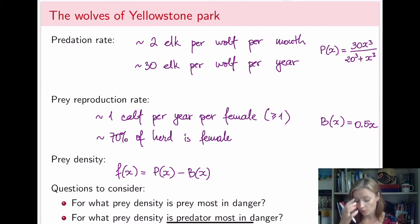You can also consider the function the other way around, and you'll just have to adjust what you're on the lookout for in that case, right? And so then we have to think about two questions to consider. For what prey density is prey most in danger,